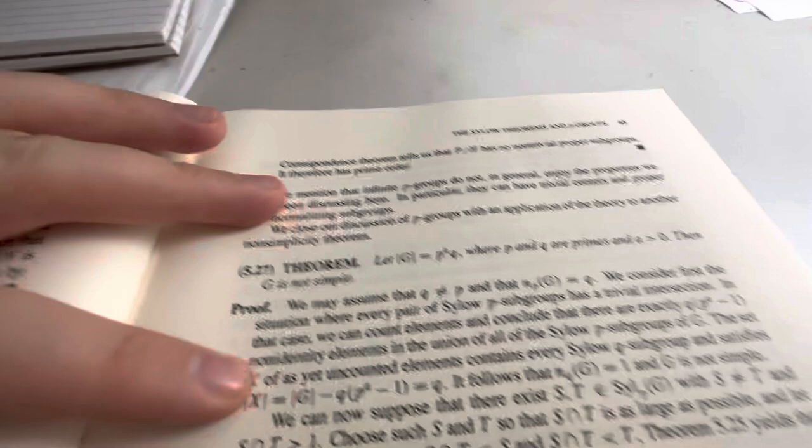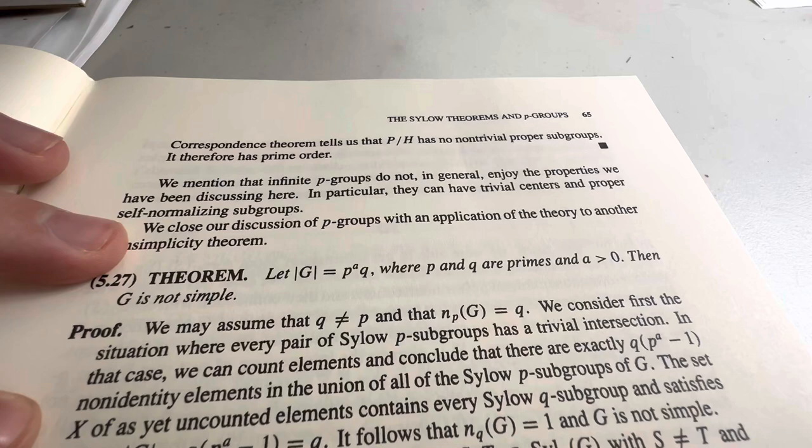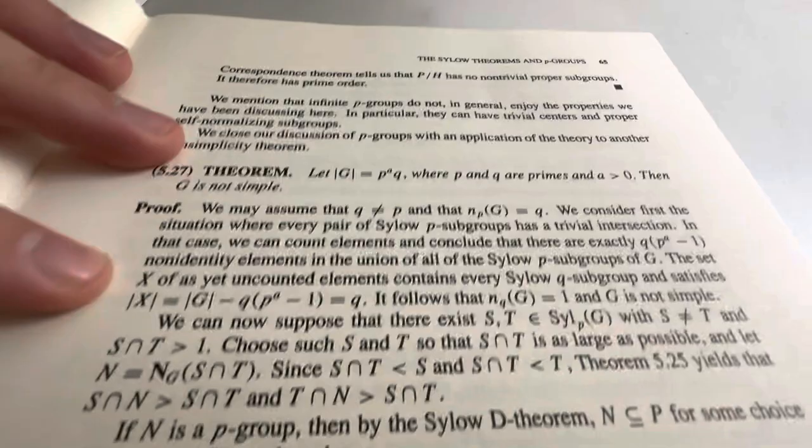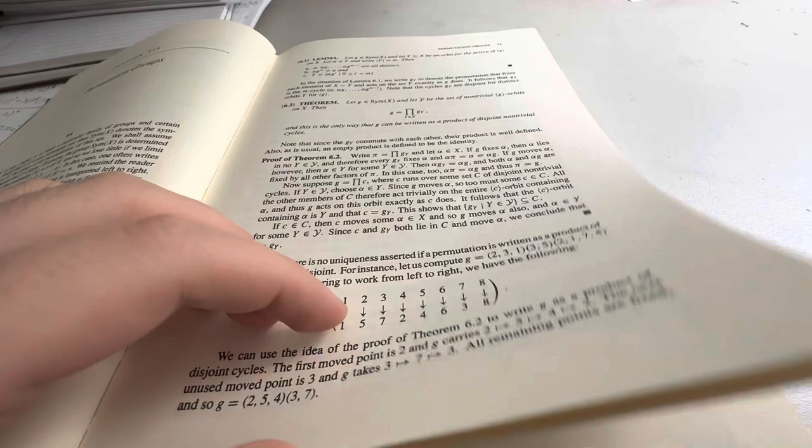Alright, what's this theorem say? G is a group of order P to the A times Q, where P and Q are primes. A is positive. Then G is not simple. And you can see the proof is a bit winded. Starts up here. Works all the way down. Permutation groups. Permutations always made my head hurt. Just couldn't get a grip on it. I think part of it was the notation.